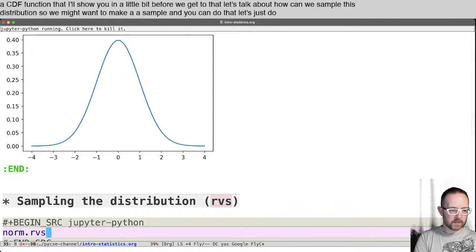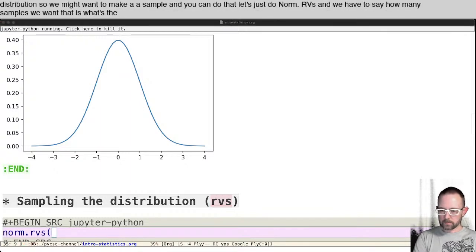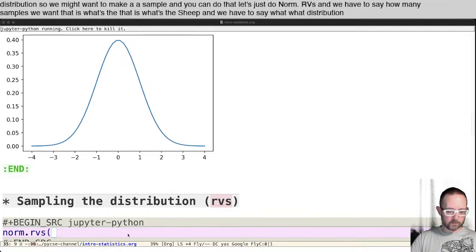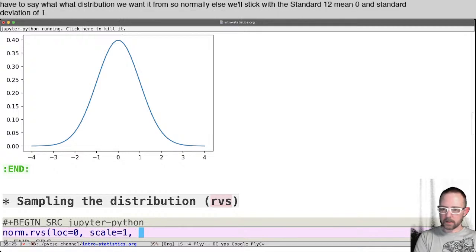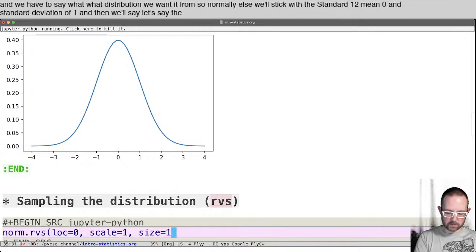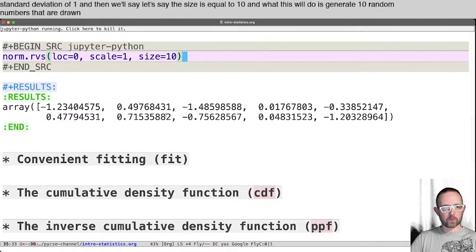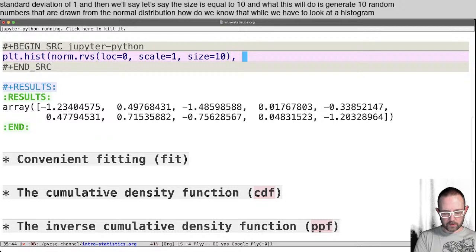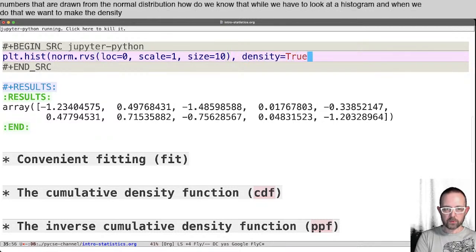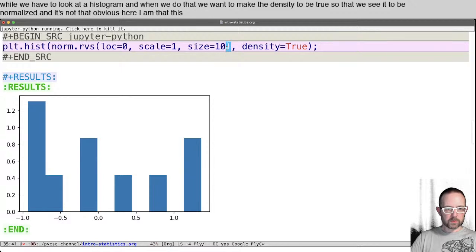So we might want to make a sample, and you can do that. Let's just do norm.rvs. And we have to say how many samples we want. That is, what's the shape. And we have to say what distribution we want it from. So normally we'll stick with the standard one, the mean zero, standard deviation of one, and then we'll say, let's say the size is equal to 10. And what this will do is generate 10 random numbers that are drawn from the normal distribution. Now, how do we know that? Well, we have to look at a histogram.